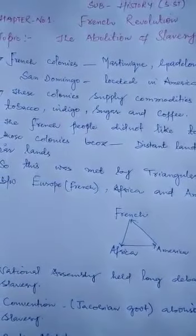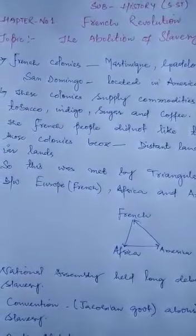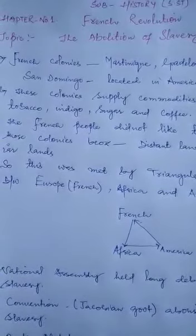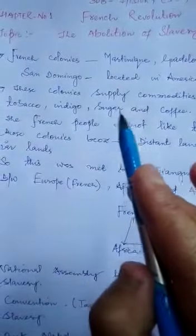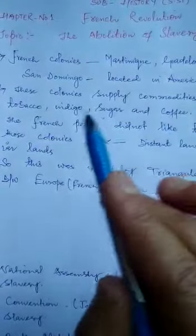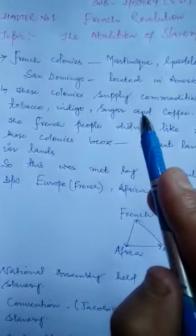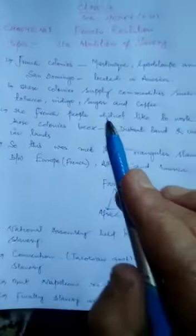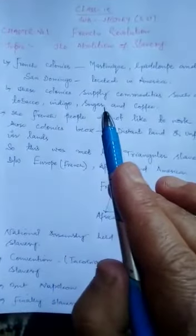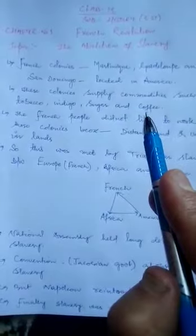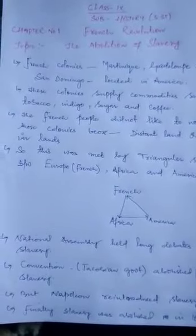یہ کالنیز France کو different types of commodities supply کرتی تھیں، like tobacco, indigo, sugar and coffee. ان کالنیز میں یہ چیزیں cultivate ہوتی تھیں. Tobacco cultivate ہوتا تھا، indigo cultivate ہوتا تھا، sugar cultivate ہوتا تھا، coffee cultivate ہوتا تھا. From these colonies, France used to cultivate and receive these types of commodities.